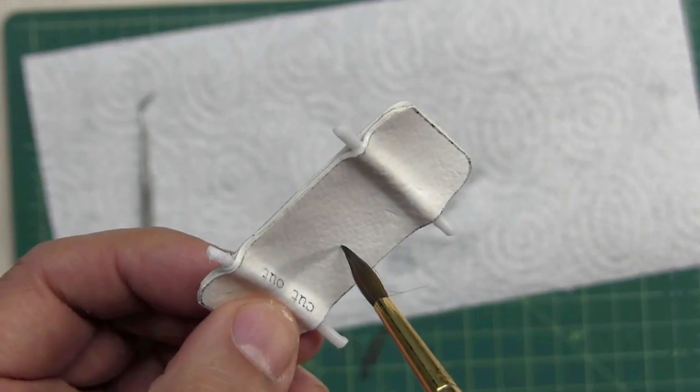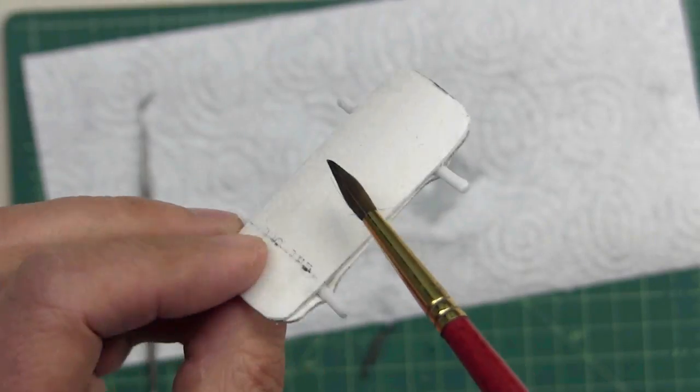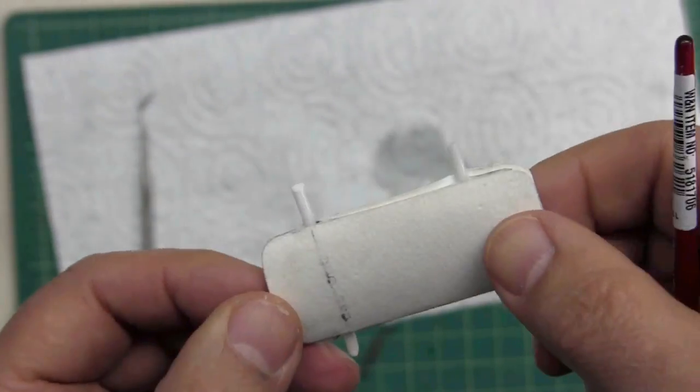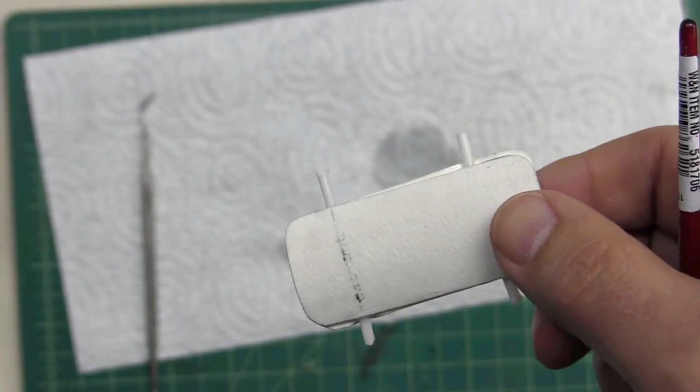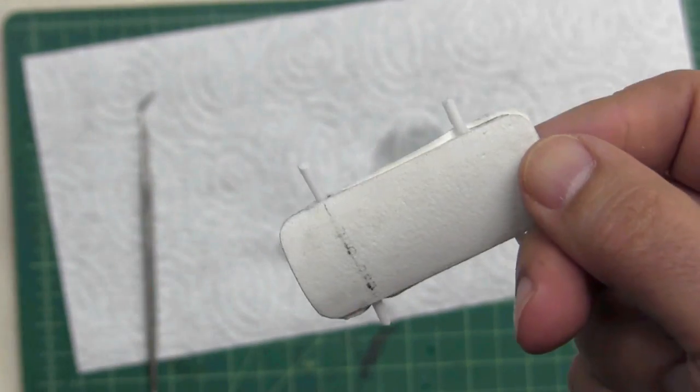I'd like to mention one thing at this stage. I used for the back 140-pound watercolor paper, the same paper that I used on the surface. This is going to result in a unit form that is very substantive. It's going to be a nice chunk of a piece.